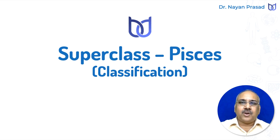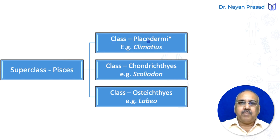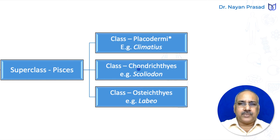Pisces is the group of all true fishes. This group has been divided into three main classes: Placodermi, Chondrichthyes, and Osteichthyes. Placodermi includes all extinct fishes, for example Climatius. Placodermi group is now extinct. However, superclass Pisces is now represented by two living groups: Chondrichthyes, including cartilaginous fishes, and Osteichthyes, which are bony fishes.